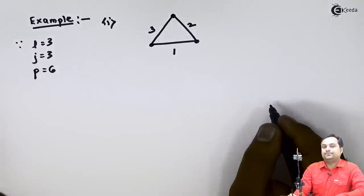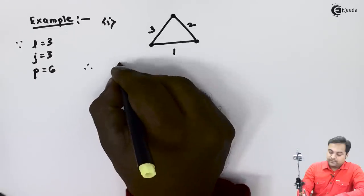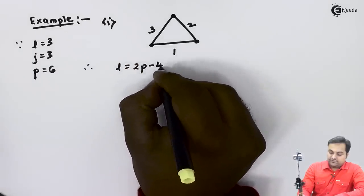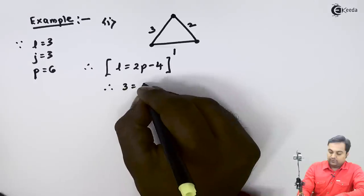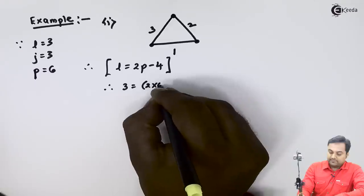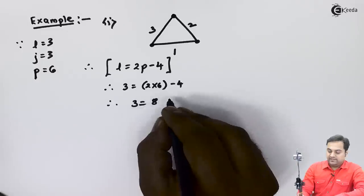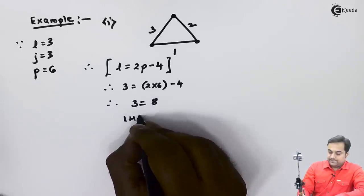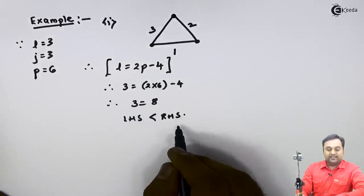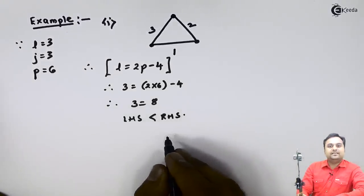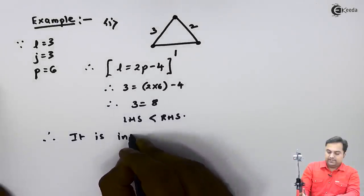Since we have three links, they form six kinematic pairs in total. Using the formula L = 2P − 4: 3 = 2(6) − 4, which gives 3 = 8. The left-hand side is less than the right-hand side. When LHS is less than RHS, it is incompletely constrained motion; therefore, this is an incompletely constrained chain.